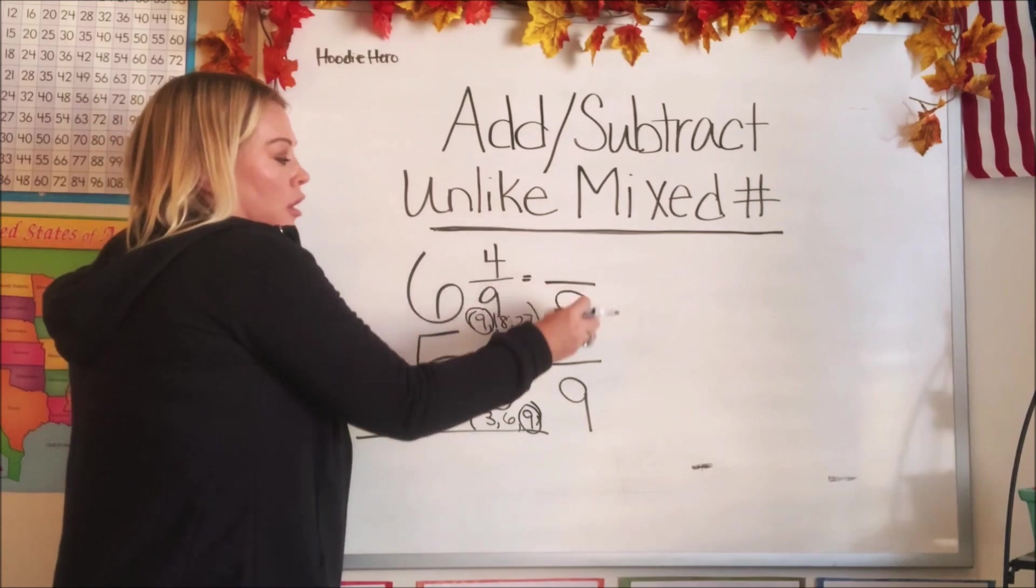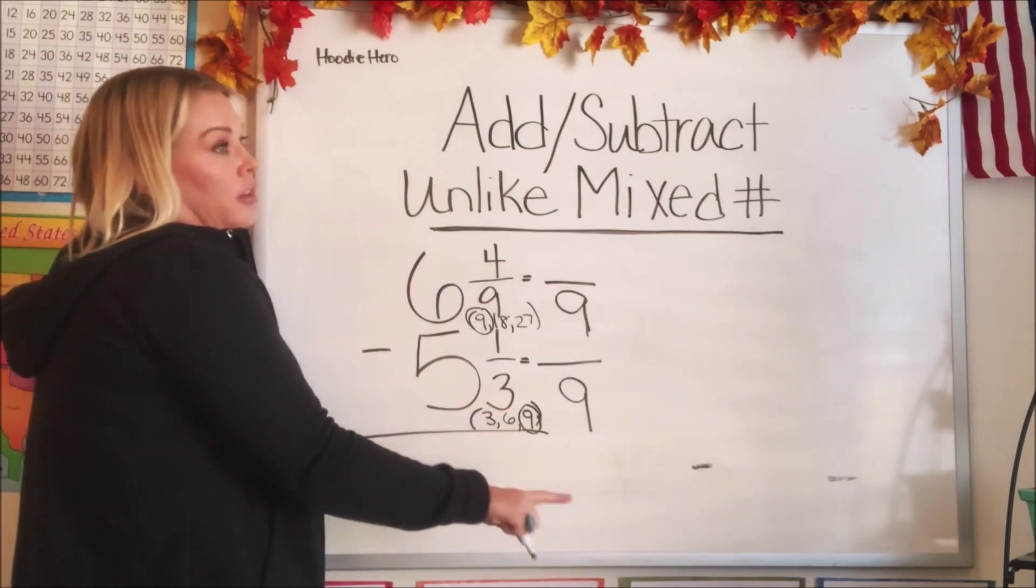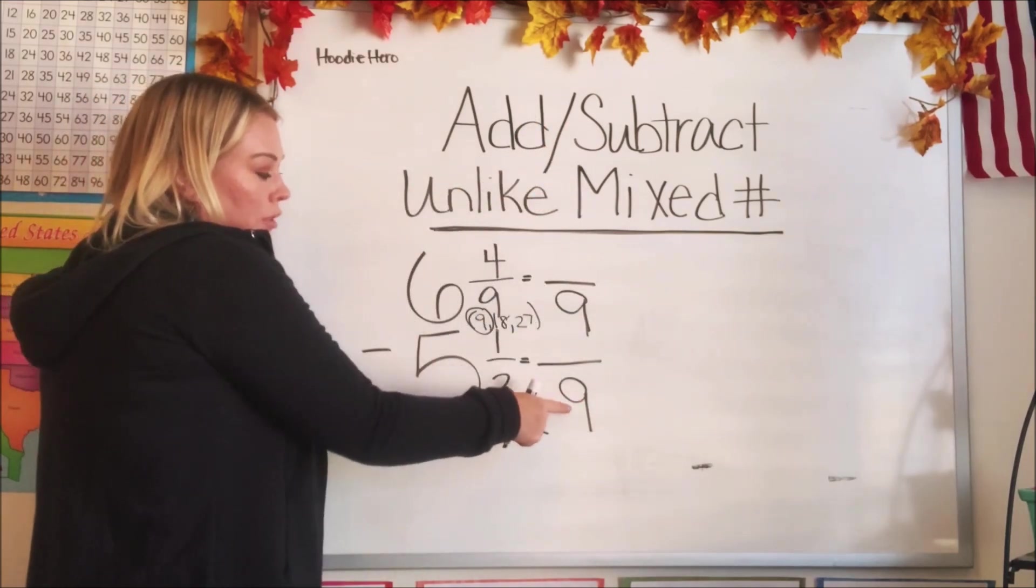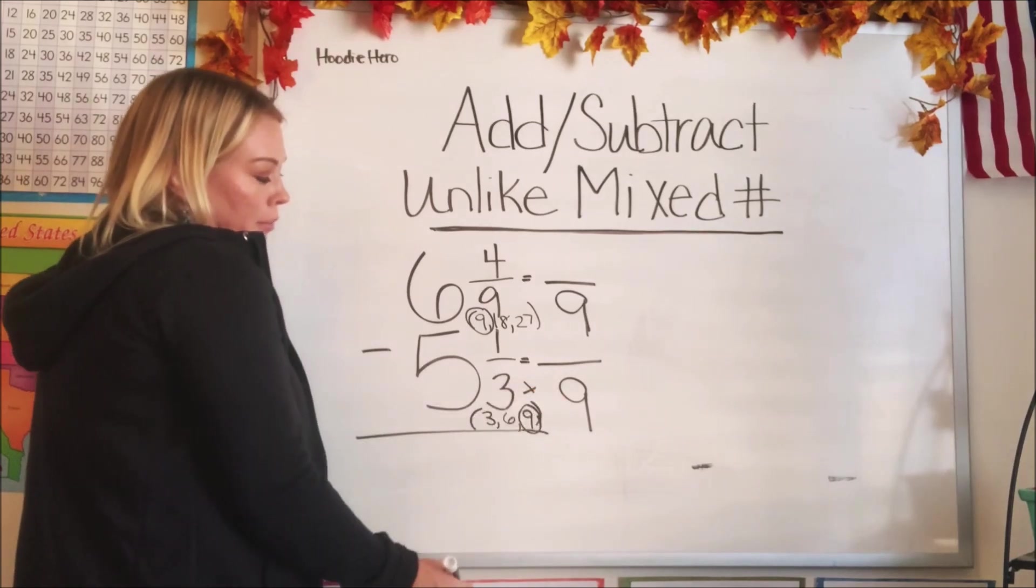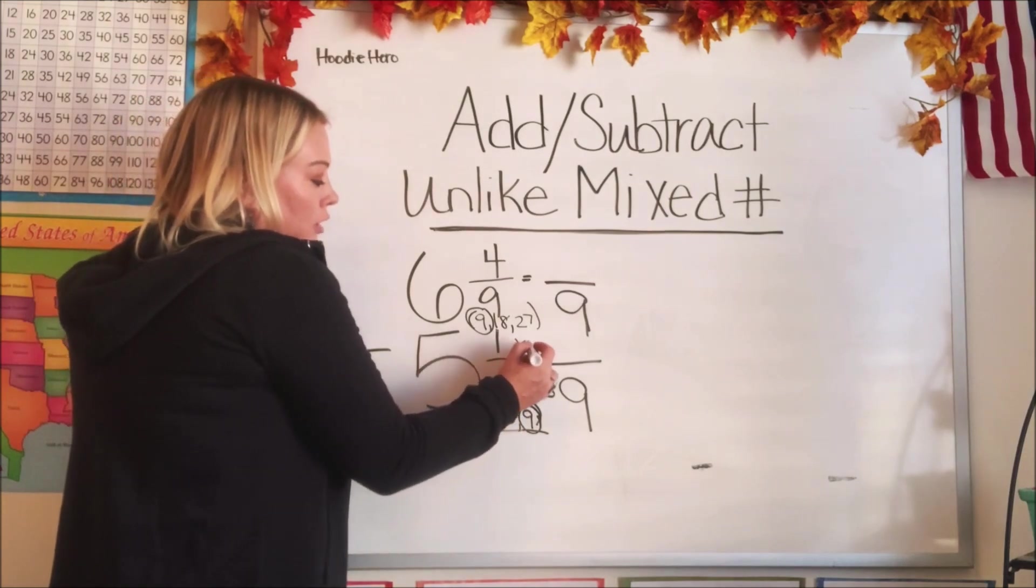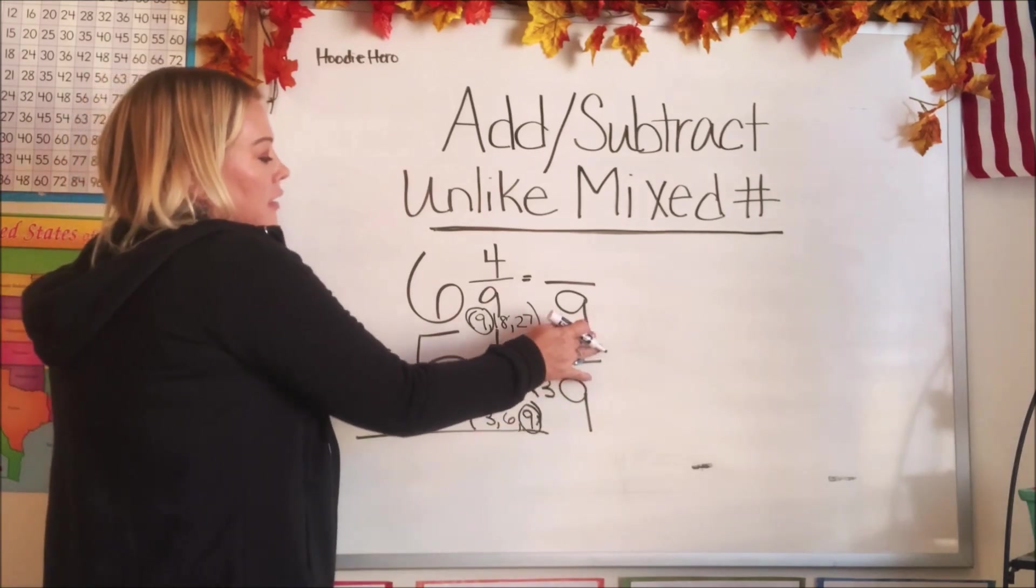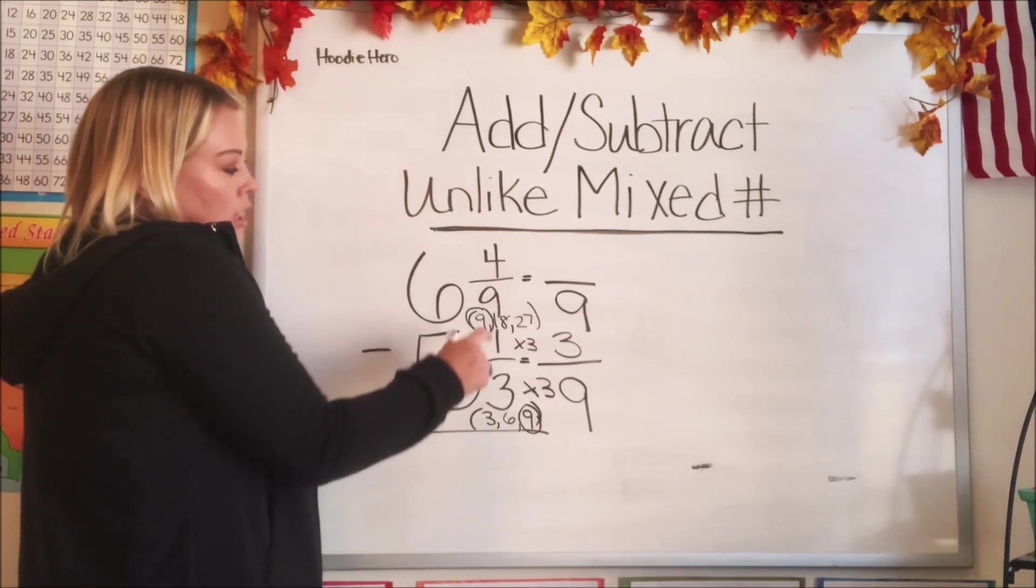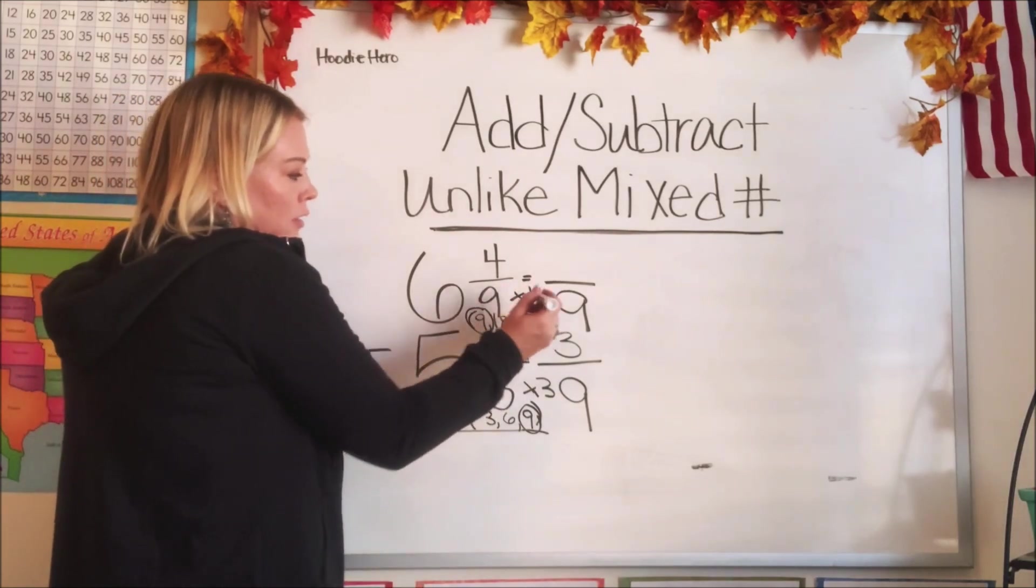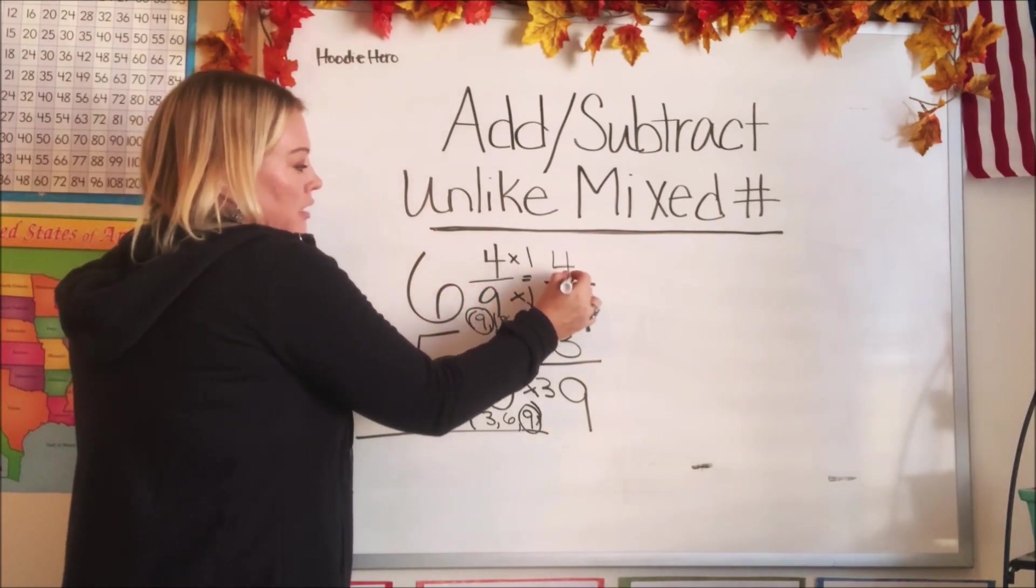Now we need to figure out what our numerators are going to be and we remember the rule. What we do to the bottom, we have to do to the top. So let's start with the 3 and 9. How did we get from 3 to 9? What did we multiply it by? 3 times 3 is 9. Now we need to multiply up here. 1 times 3 is 3. Let's do our top fraction. What times 9 gave us 9? It's a really hard one guys. That is a 1. We do it to the top number. 4 times 1 is 4.